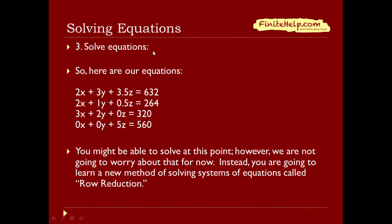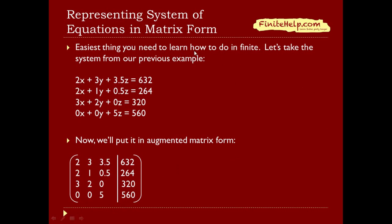So now you solve the equations. Here are our equations as represented on the table — the left-hand side set equal to the right-hand side. You're going to learn a new method of solving a system of equations called row reduction. The very first step of row reduction is representing a system of equations in matrix form. This is the single easiest thing you're going to need to learn how to do in finite math.